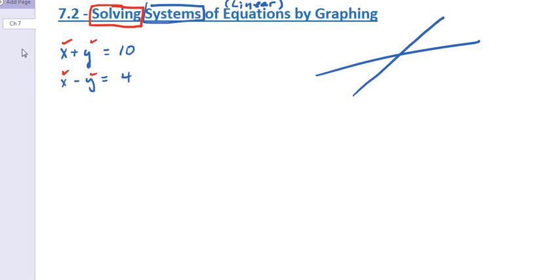So if this is my little system, for an example, can any of you tell, right now, by looking at those two equations, what x and y are? 7 and 3.